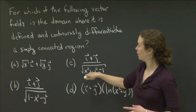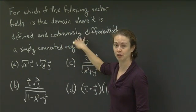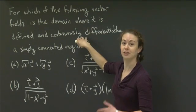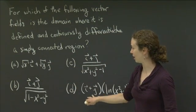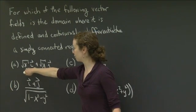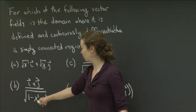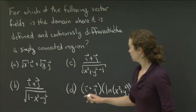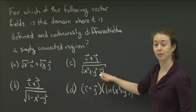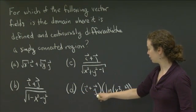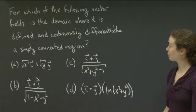There are two parts for each of these problems. First, determine all of the values for which the vector field is both defined and continuously differentiable. Then look at that region and determine if it is simply connected. There are four different vector fields, all in the plane. The first one is √x·i + √y·j. The second one is (i + j) divided by the square root of 1 minus x squared minus y squared. The third one is (i + j) divided by the square root of the quantity x squared plus y squared minus 1. And the fourth one is (i + j) times the natural log of x squared plus y squared.